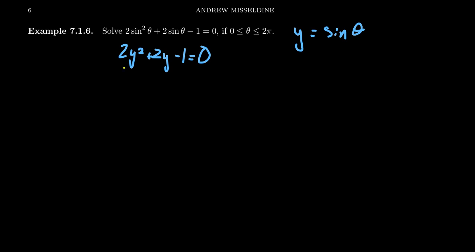When you try to factor, you run into problems. Taking 2 and −1 together: 2 × (−1) = −2. Are there factors of −2 that add up to 2? The answer is no. The only options are 2 and −1 (sum = 1), or −2 and 1 (sum = −1). Those are the only ways to factor −2, so factoring is not going to work here. Instead, we're going to use the quadratic formula.